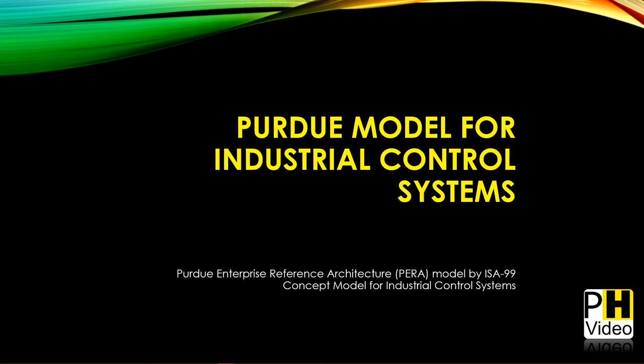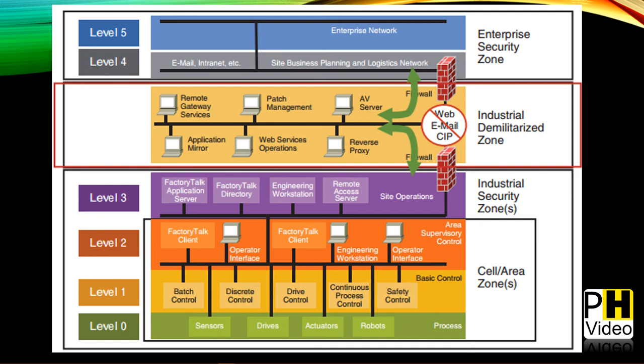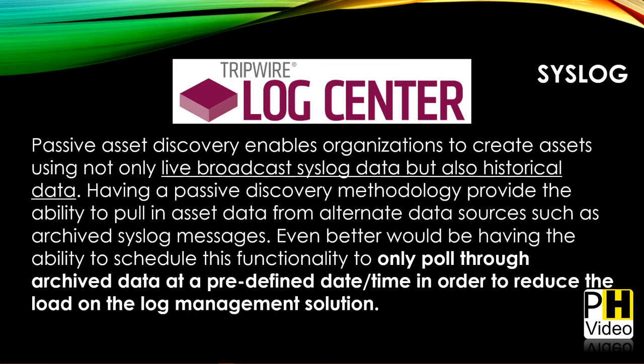If you have an industrial control system, things are different. Full transparency: I've been doing this over 20 years but have never worked for a company using industrial control systems, so please share your insights in the comments. This is called the Purdue Model for industrial control systems — similar to the OSI model, it has six levels. A tool I think is great for ICS is Tripwire Log Center — it puts very little traffic on your network because it deals with your log management solution.